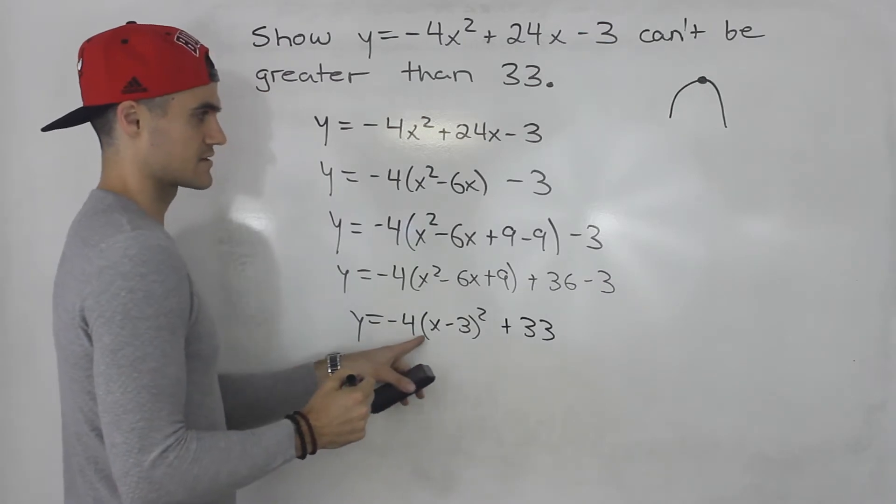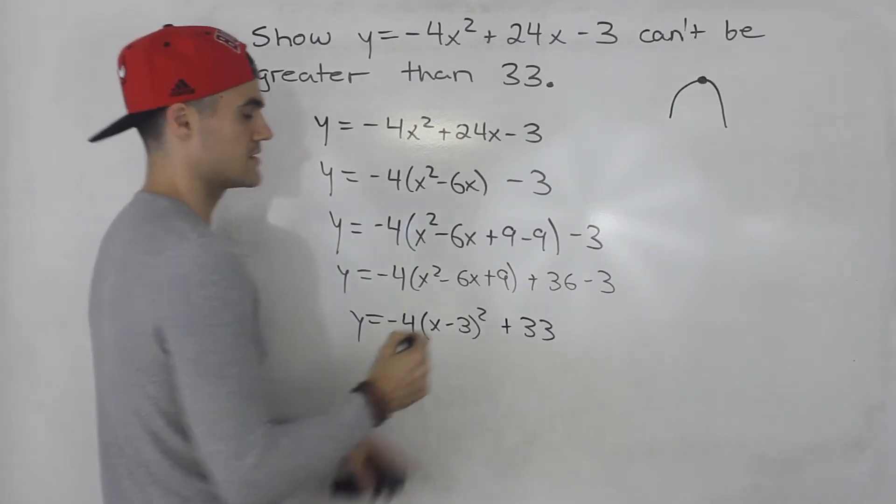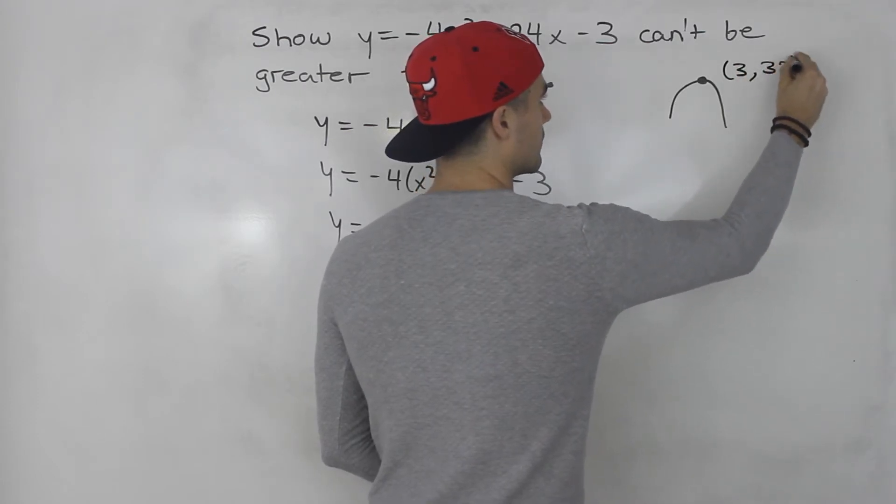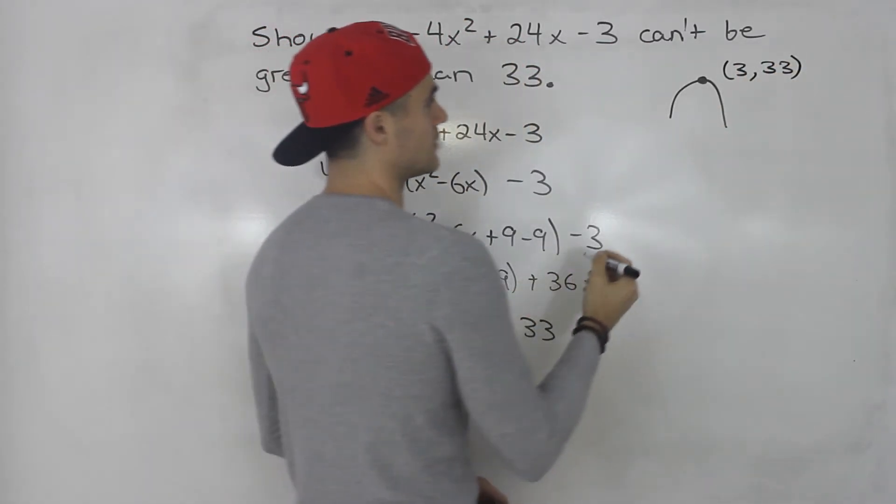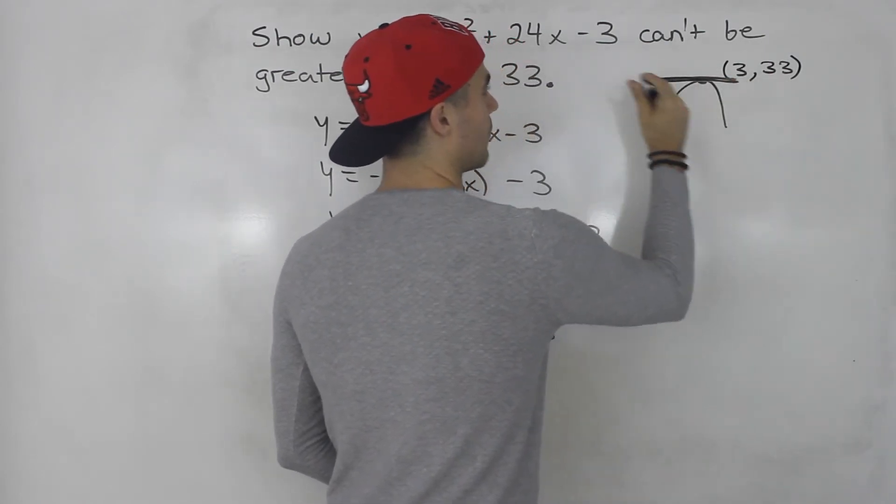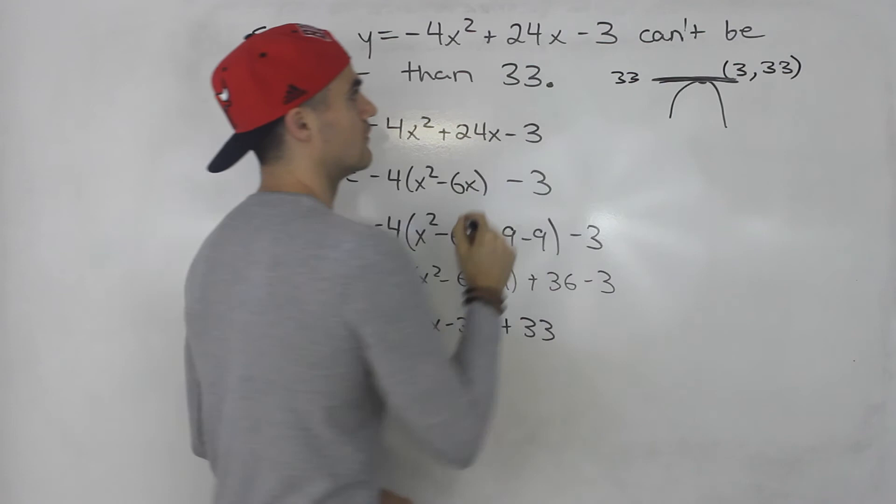So what's the vertex of this parabola? This parabola here has a vertex of (3, 33). So the maximum value that it could have is that y-value of 33.